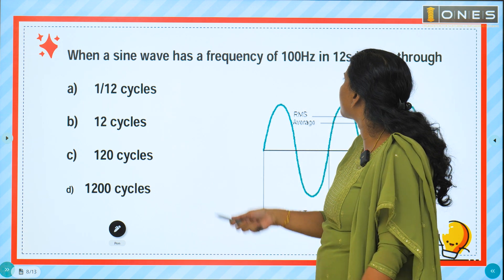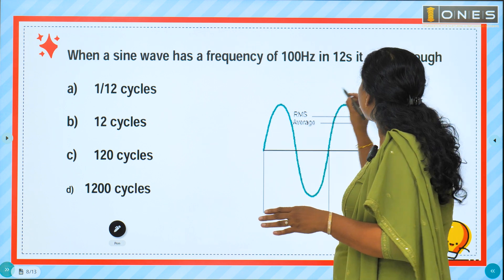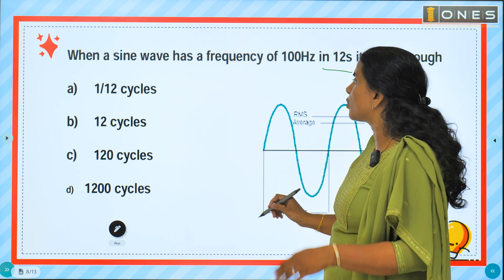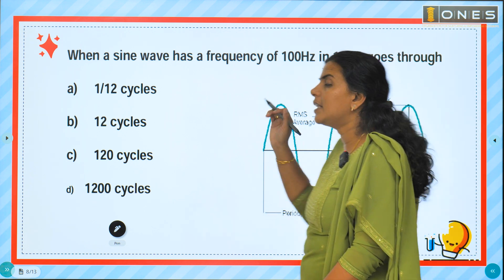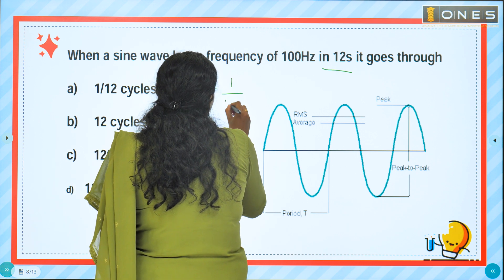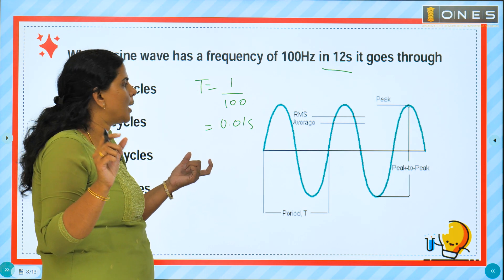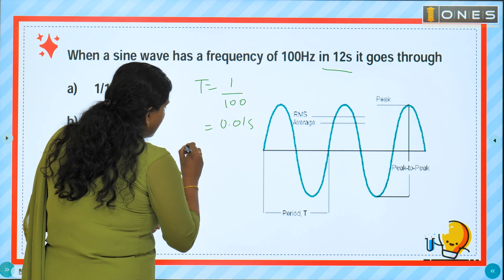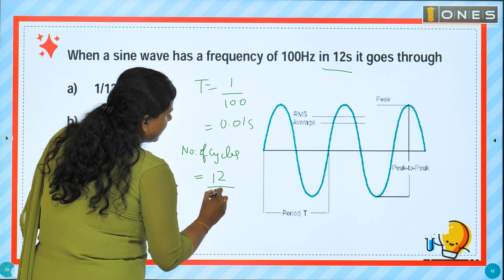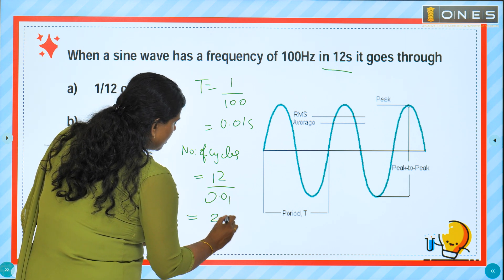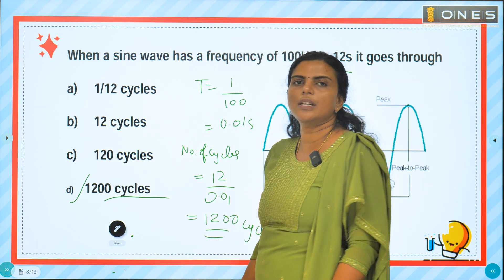When a sine wave has a frequency of 100 hertz, in 12 seconds it goes through how many cycles? The time period of one cycle is 1/100 = 0.01 second. In 12 seconds, the number of cycles equals 12 divided by 0.01, which is 1200 cycles. Option D is the correct answer: 1200 cycles.